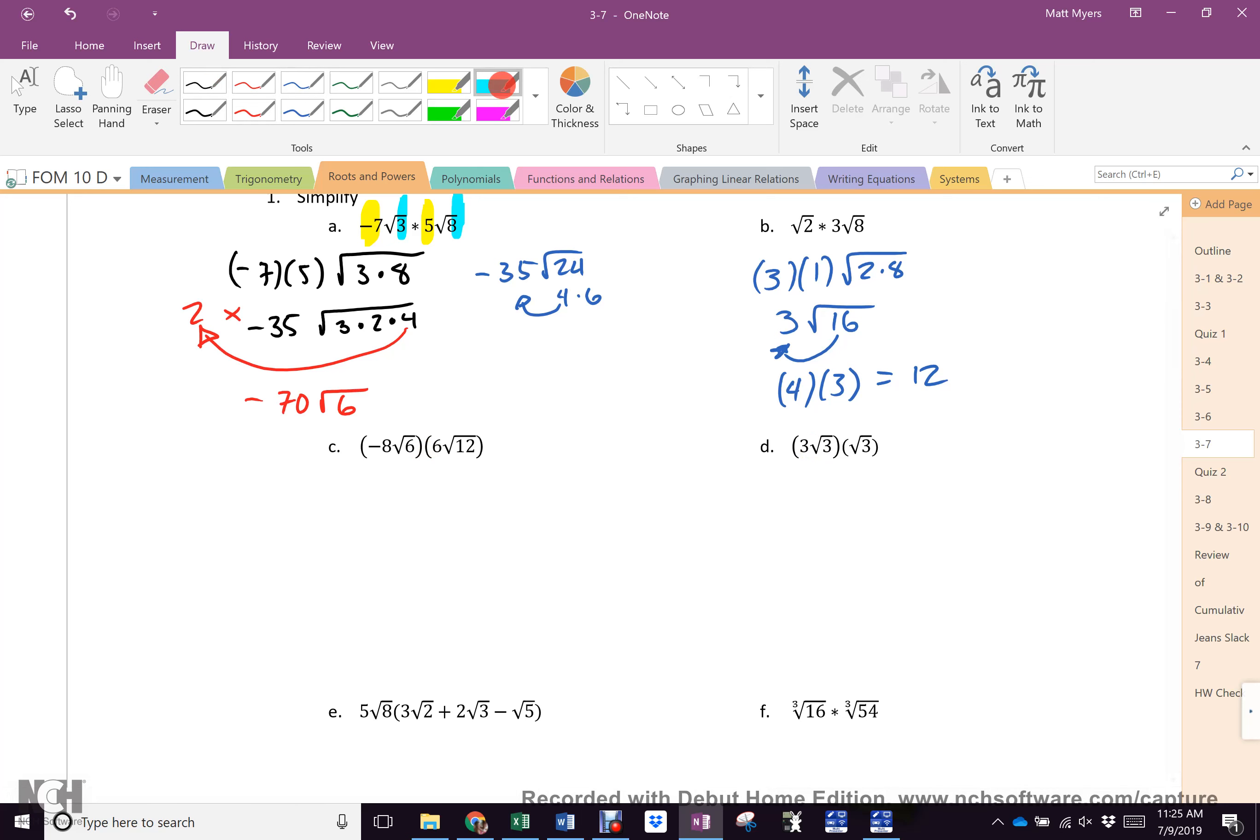Okay. Can I skip this step on the first one? Is everybody cool if I write negative 48 root 72? Cool. This, of course, is 2 times 36. So what's coming out of there? 36. So this becomes negative 288 root 2. Easy, easy, lemon squeezy, right?